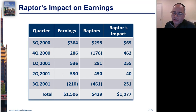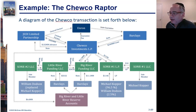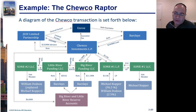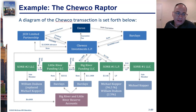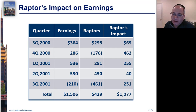Enron's earnings were increasing quite healthily until the third quarter of 2001. That was the reporting in October 2001 where they reported a big loss. What happened was that Enron kept shifting more and more money-losing assets to the Raptors to hide their losses and their debts, and they didn't have to consolidate the Raptors, so they could completely ignore all of these losses.